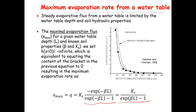The solid line in the figure shows the model prediction, and the symbols represent experimental data from Gardner and Fireman (1958). This was an example of using the steady state unsaturated flow equation to describe maximum evaporation flux as a function of water table depth, saturated hydraulic conductivity Ks, and the fitting parameter beta used in Gardner's model.